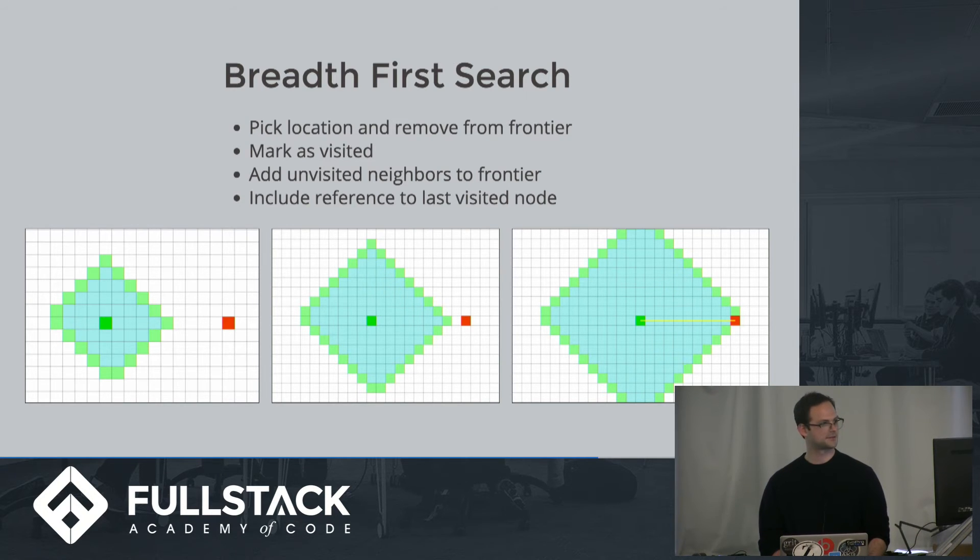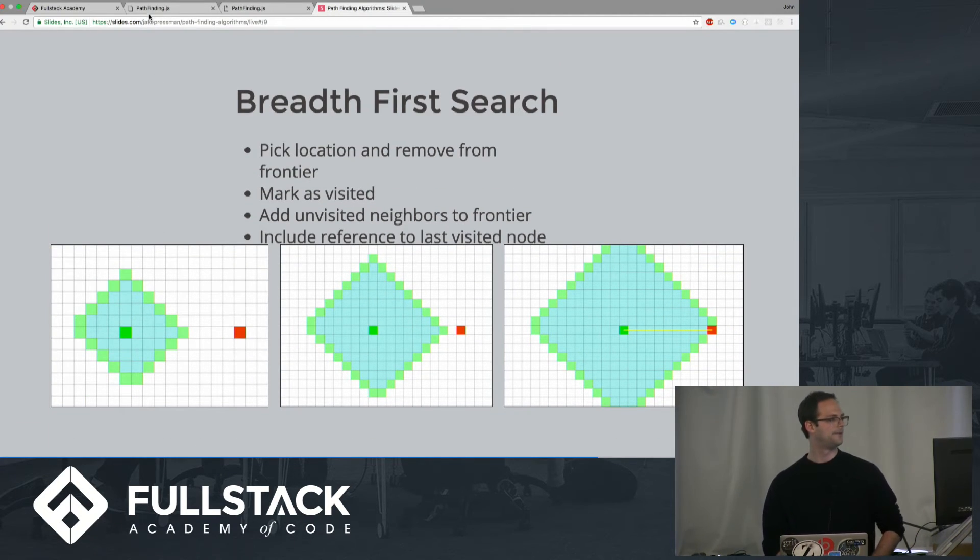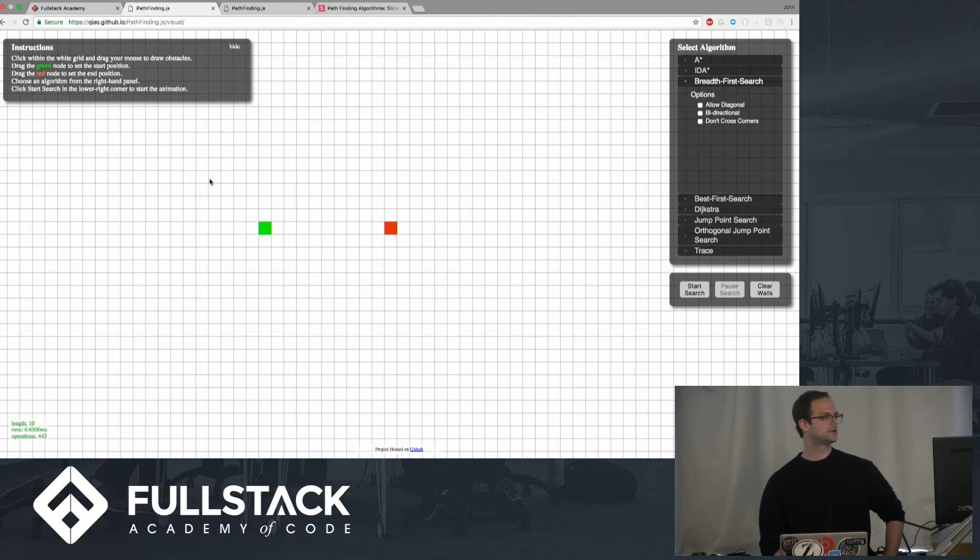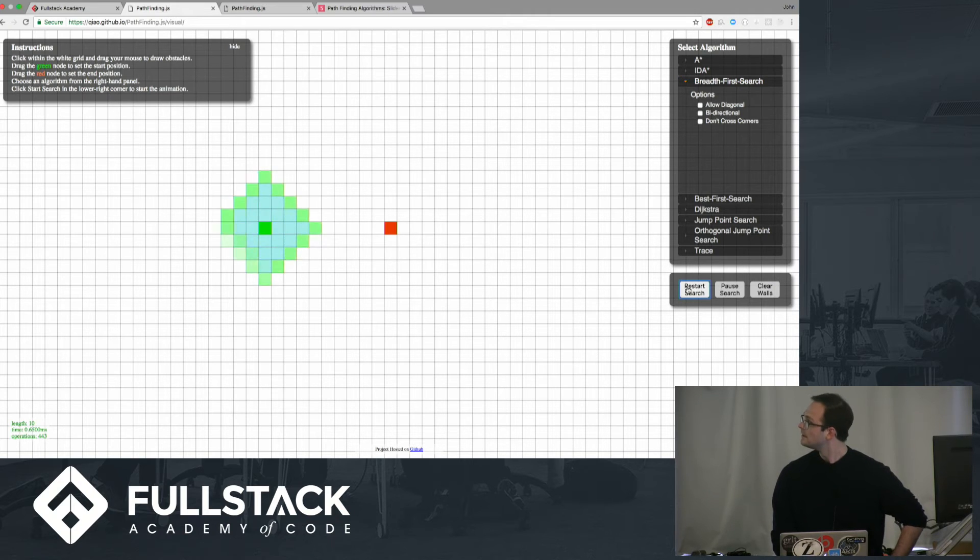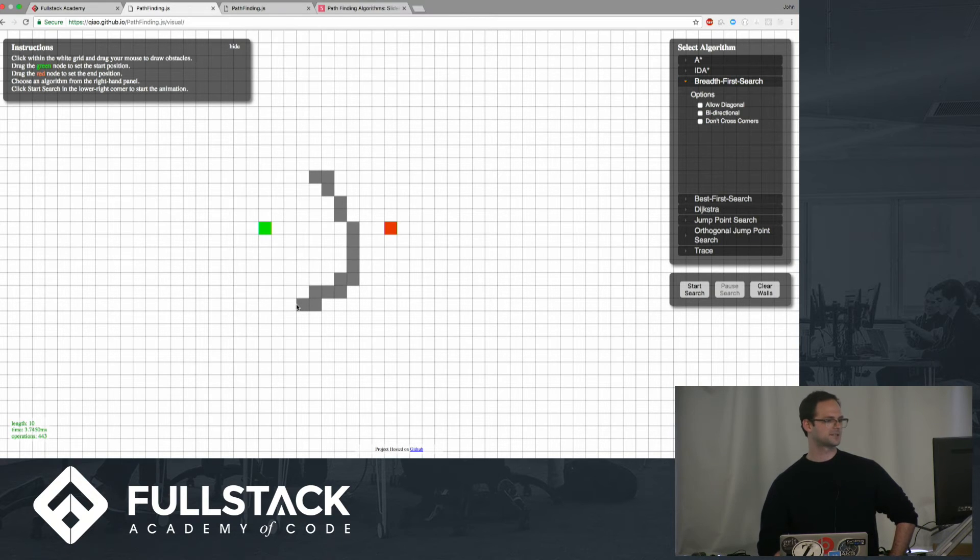We're going to do a quick visualization here. This is a neat little tool called pathfinding.js. There are different pathfinding algorithms you can use. Here we're just going to look at how a breadth-first search works. You can see how it kind of emanates out there and it eventually reached the destination node and retraced the path. You can clear this and create an obstacle, start the search again, it wraps around this obstacle.